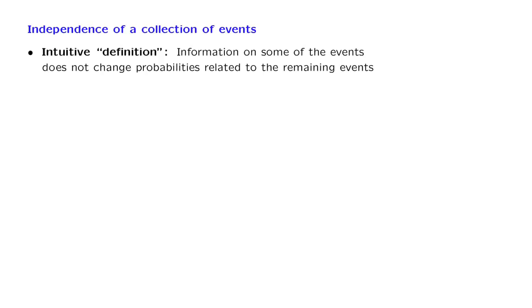Let us start with the intuition. We will say that the family of events are independent if knowledge about some of the events does not change my beliefs, my probability model, for the remaining events.